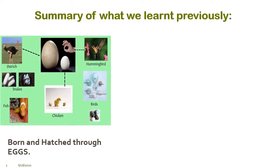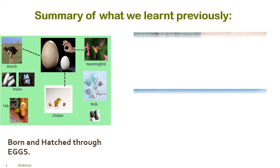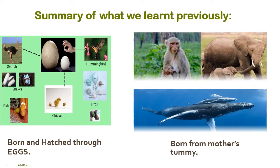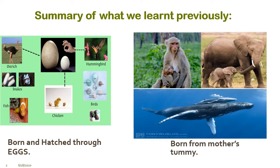Some animals lay eggs — they are hatched and the young ones are born. You can see in this picture the egg of an ostrich, the egg of a hen, and the egg of a hummingbird. The other picture shows us that young ones are born from their mother's tummy. The examples are monkey, elephant, and whale.